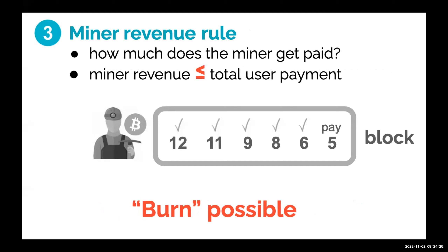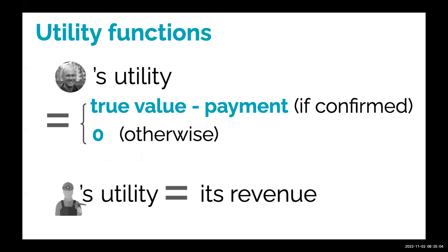Finally, we have the miner revenue rule, which specifies how much miner revenue is earned. Importantly, we allow partial to full burning — the miner doesn't necessarily collect all payments. In general, miner revenue is upper-bounded by total user payments. The utility function is natural: a user's utility is their true value minus payment if confirmed, and zero if not confirmed. The miner's utility is its revenue.